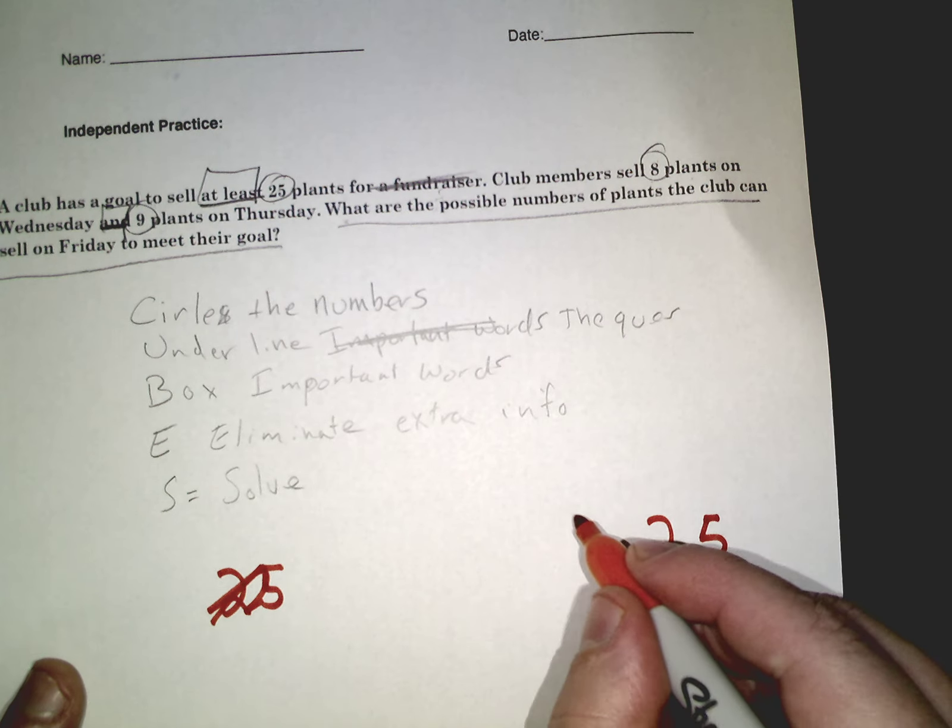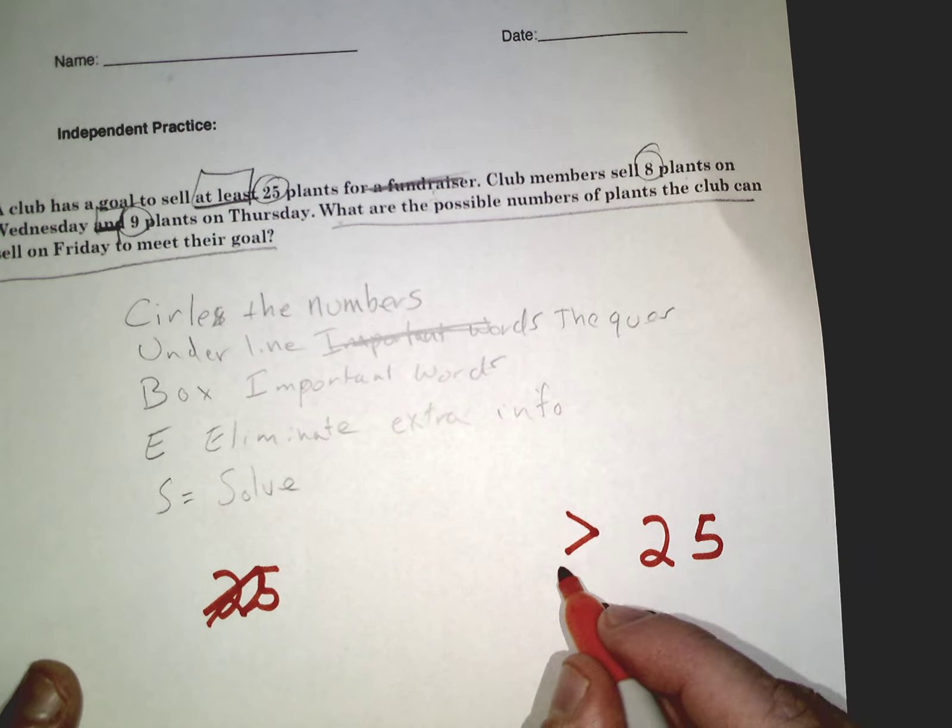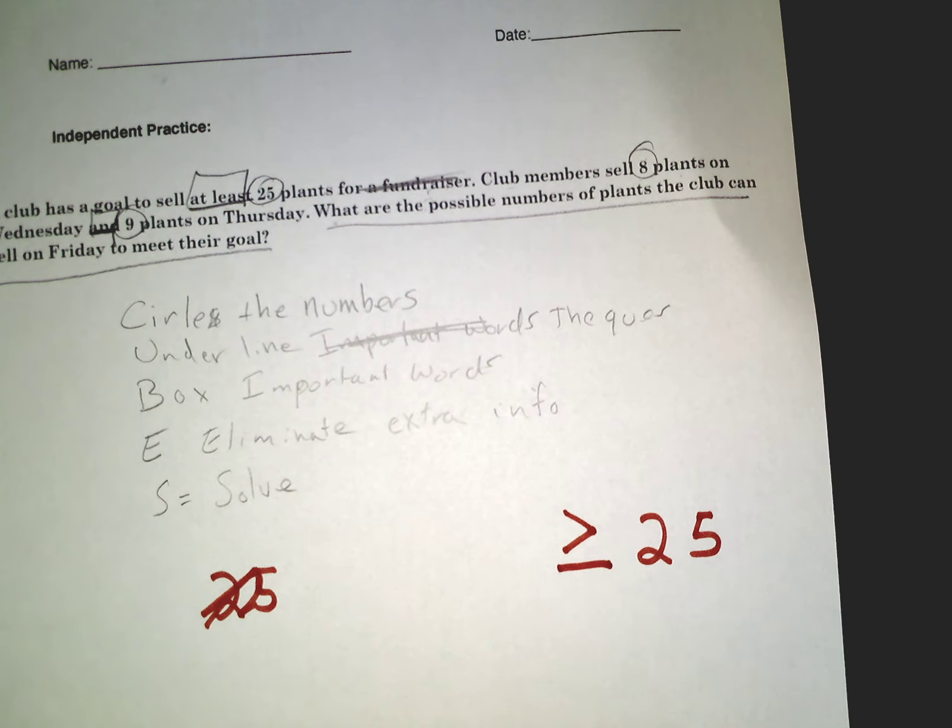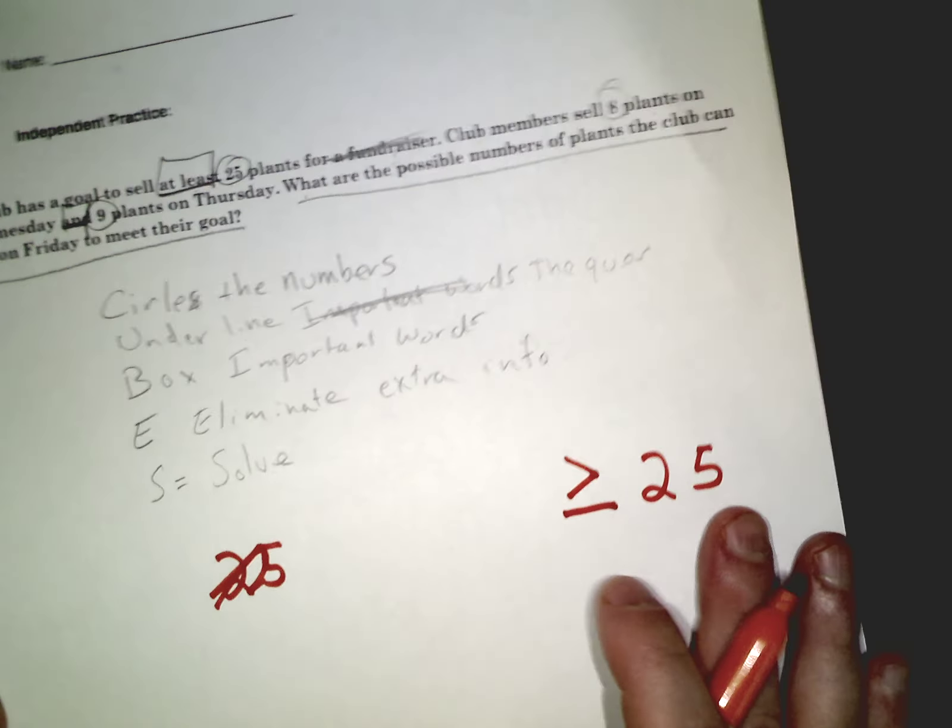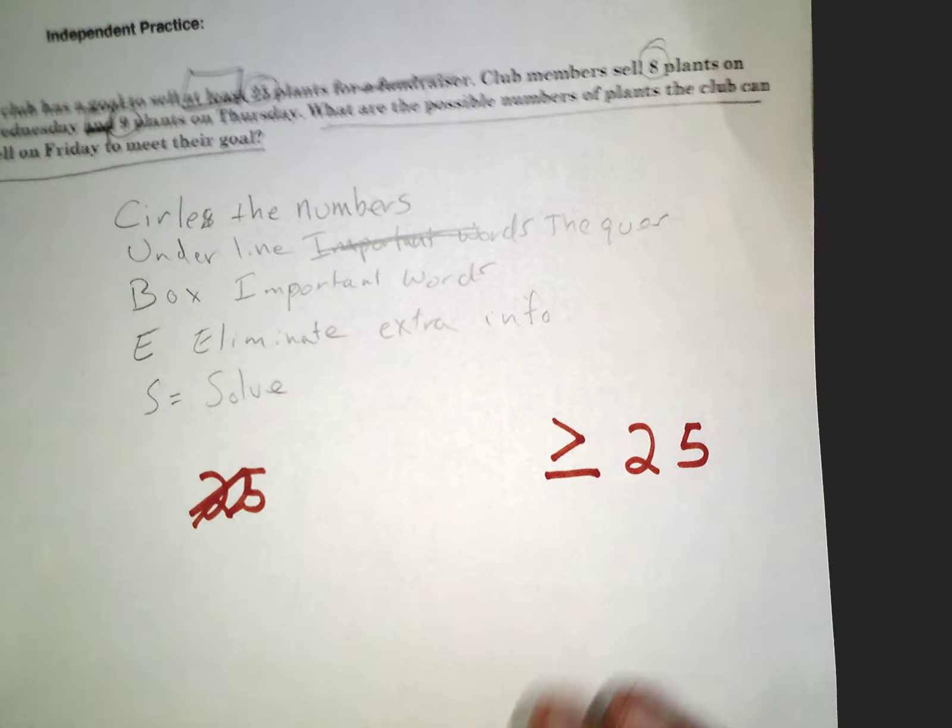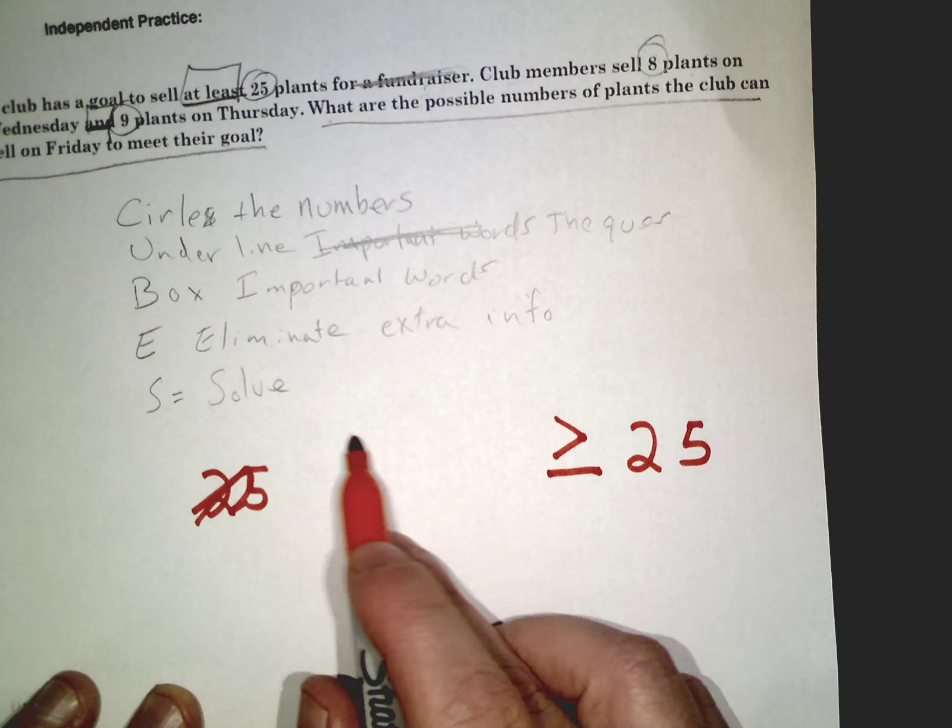It can be greater than 25, that'd be good and we'd have extra money, or it could be equal to. Equal to means that's at least. We have to sell 25. If we don't sell 25 we haven't met our goal. So when they say at least, that means the least amount you can sell. So this number here has to be greater than or equal to 25.